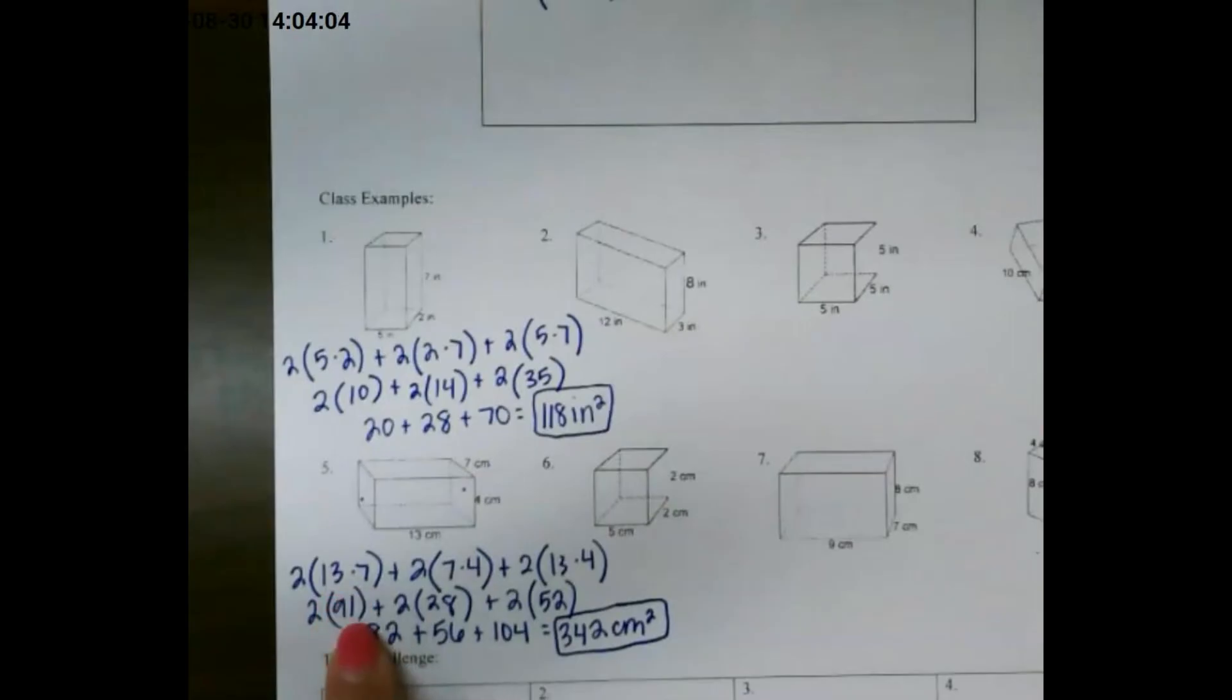So when you go through and solve each of those multiplications and add everything together, add all of your sides, you would get 342 centimeters squared.